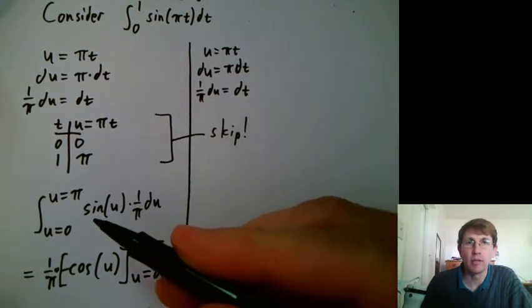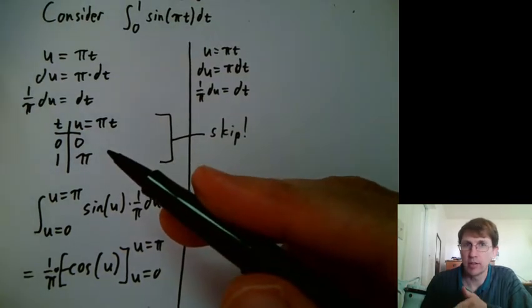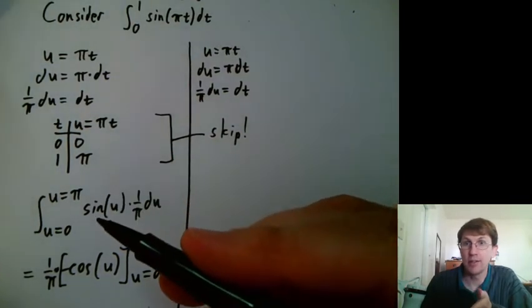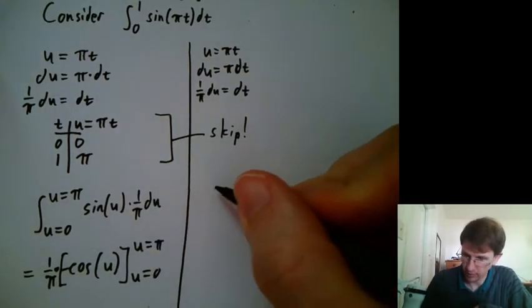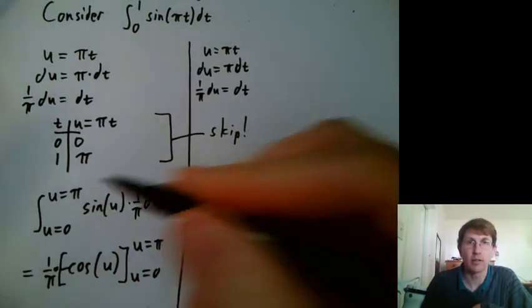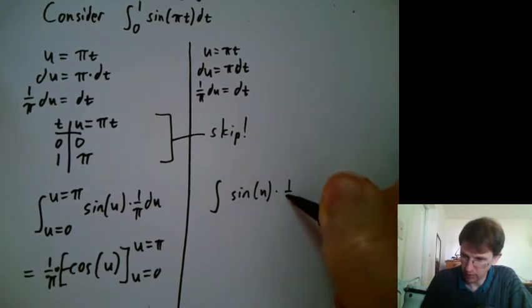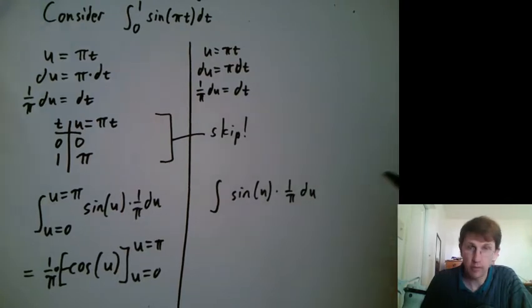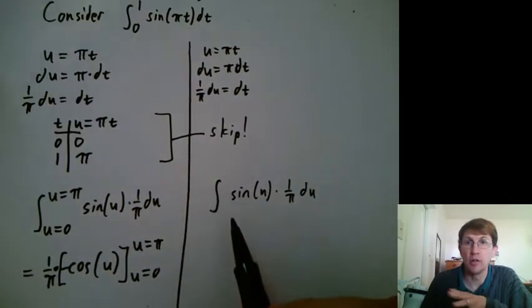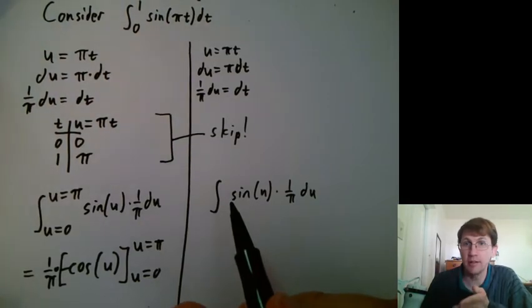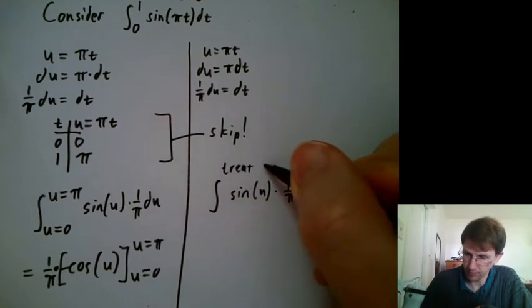And then when I rewrite it in terms of u, I can't put in the old t values because that's just wrong. But I could just not write anything for the upper and lower bounds. So I could write the integral of sine of u times 1 over π du. Same thing I wrote for an integrand here, but just no start and stop. So treat this as indefinite temporarily.